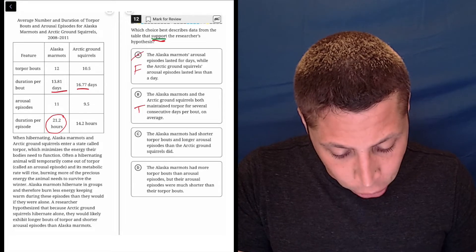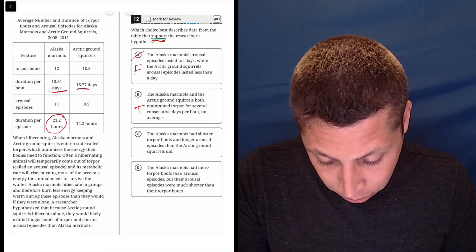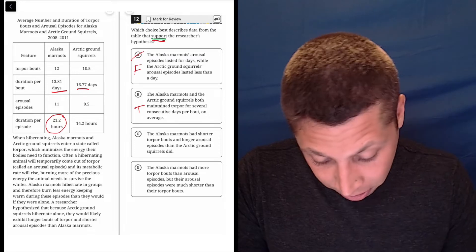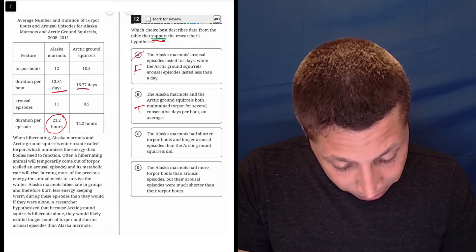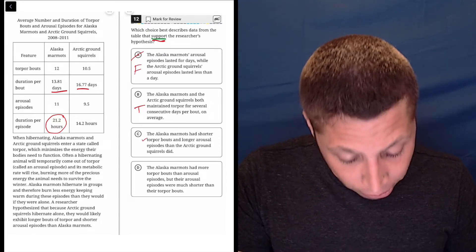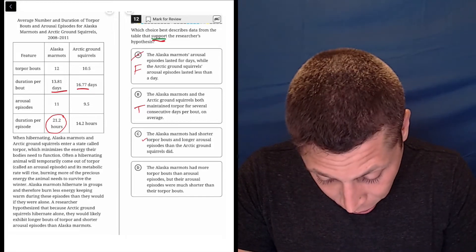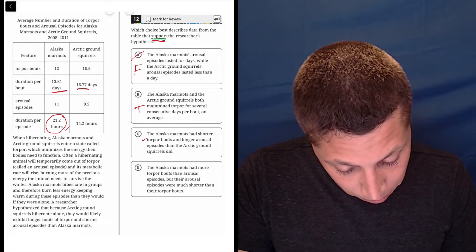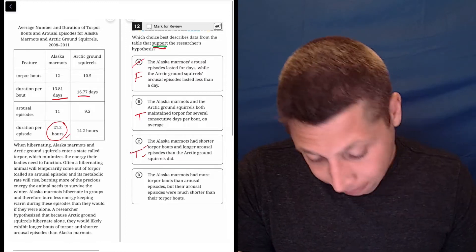The Alaska marmots had shorter torpor bouts. Is that true? The Alaska marmots, shorter torpor, so that's 13.81 versus 16.77, so that part's true. And longer arousal episodes, that's also true, 21.2 to 14.2, so that's also a true answer.